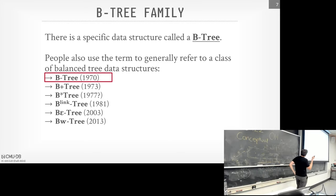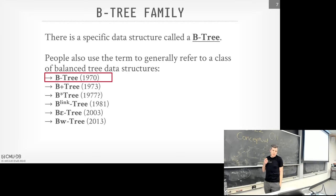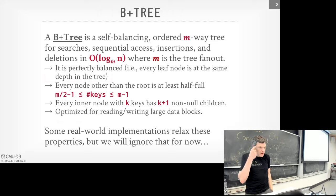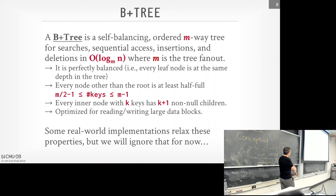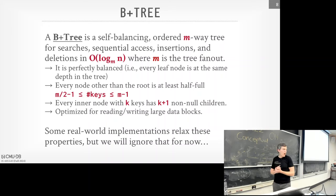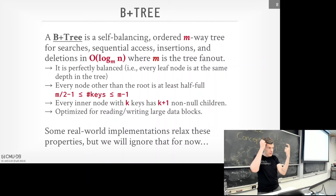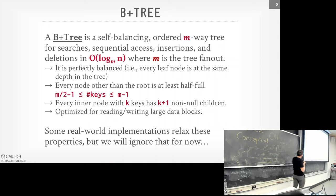So what is the B+ tree? It's a self-balancing ordered M-way tree that supports efficient searching, sequential access, insertions, and deletions — all in O(log N) time. The M factor is the fanout: the number of branches or pointers coming out of each node. Binary would be M equals 2, but a real database system's fanout is hundreds of keys per node — think about how many 64-bit integer pairs fit in an 8 KB Postgres page.